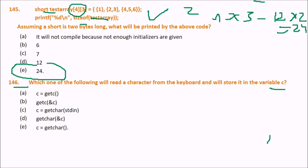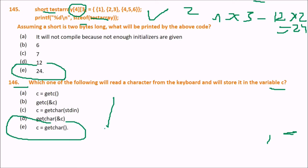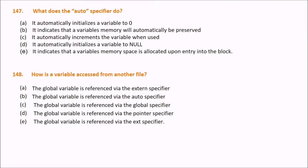Which of the following will read a character from the keyboard and store it in variable C? The answer is E: c = getchar(). getchar() is the function used to read a character from the keyboard.